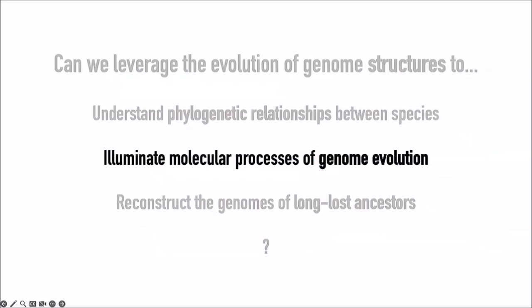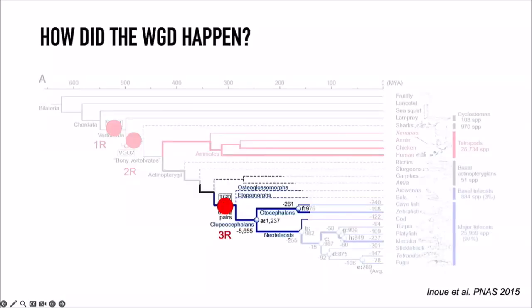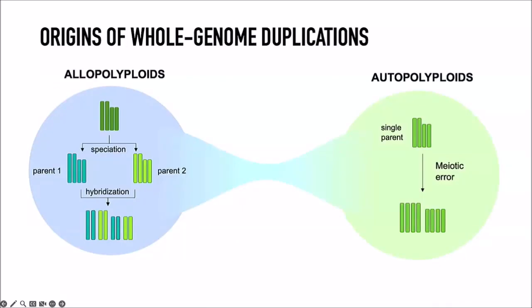I'm moving to the second part of my talk, where we use genome structures to understand how the genome evolves at the molecular level after whole genome duplication. The second question we're interested in is: how did the whole genome duplication actually happen? There are two main ways whole genome duplications can occur.